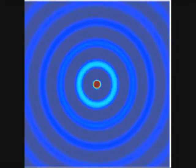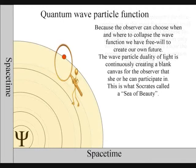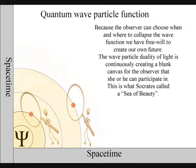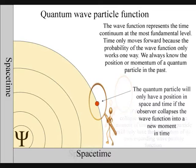When we observe only one atom, we see an expanding quantum wave particle function that the observer can collapse into a quantum particle that will have its own position in time and space, that never existed before the wave function collapsed.